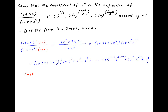Now note that the coefficient of x raise to the power 3m is equal to the product of the constant term in the first component, multiplied by the coefficient of x raise to the power 3m in the second component, which is equal to minus raise to the power m.